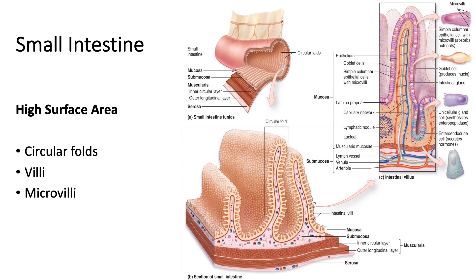On average, about 9 to 10 liters of food, water, and secretions enter the small intestine daily, and they spend about 12 hours within the intestine to maximize digestion and absorption. The first of the three structures are the circular folds, or ridges, within the small intestine. Upon those circular folds, we have these little finger-like projections called villi. If we zoom in on one of these villi, on the luminal or apical surface of the epithelial cells, we can see microvilli, or what we call a brush border.